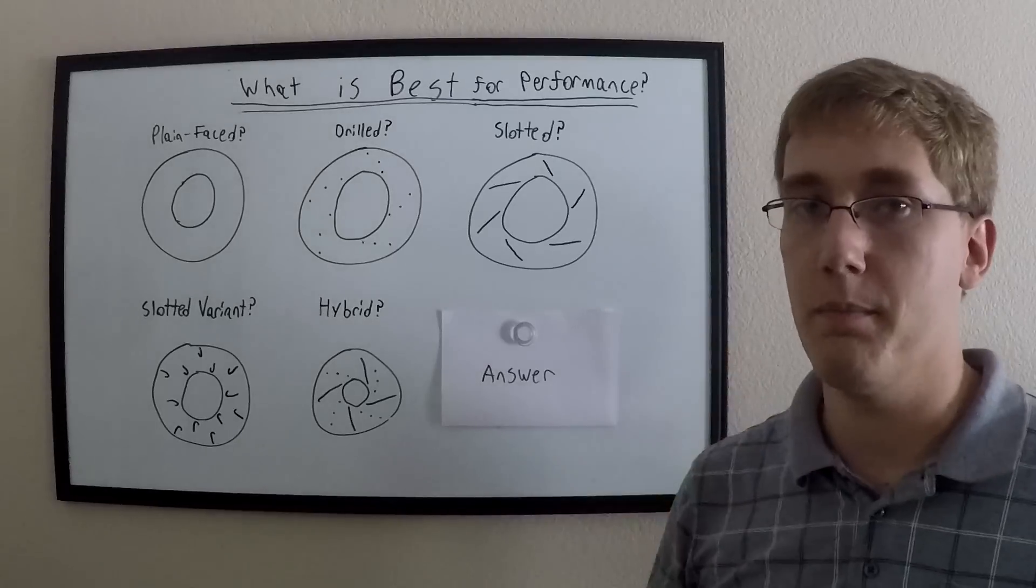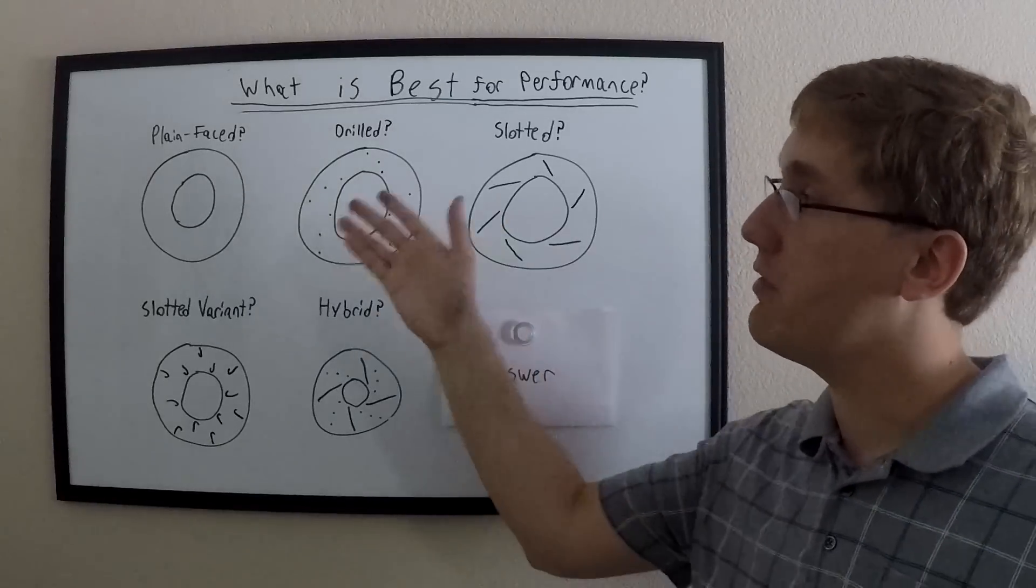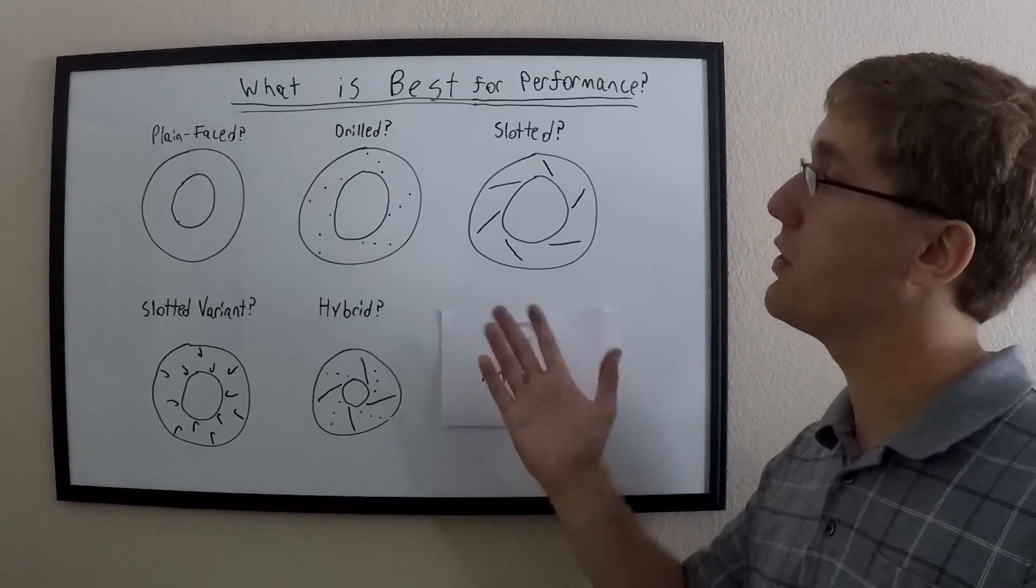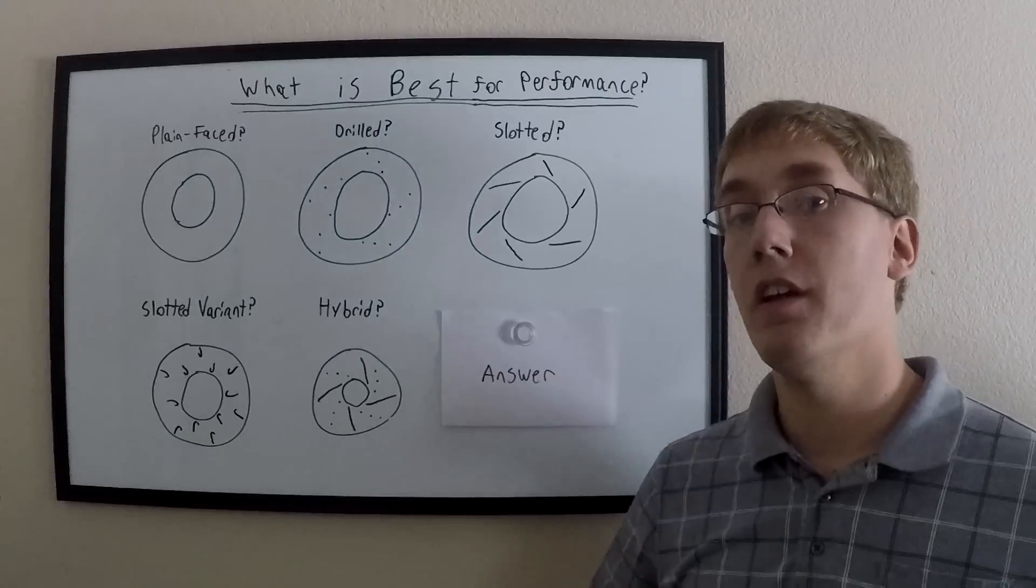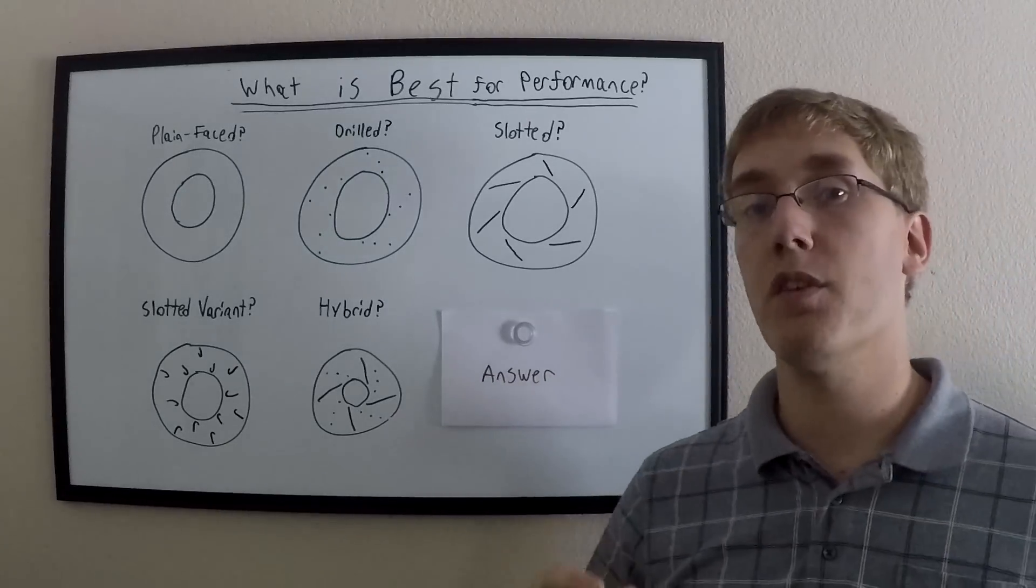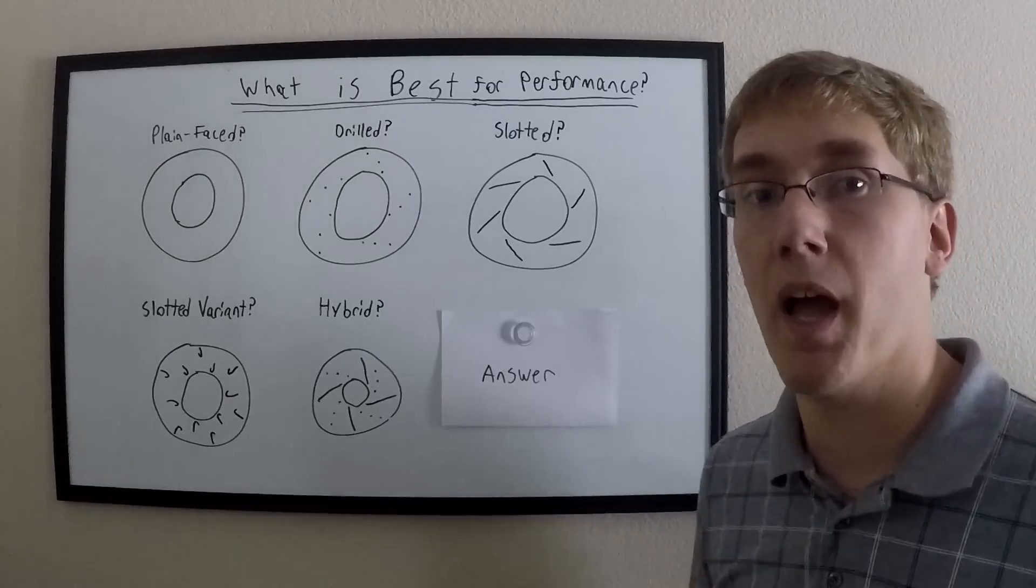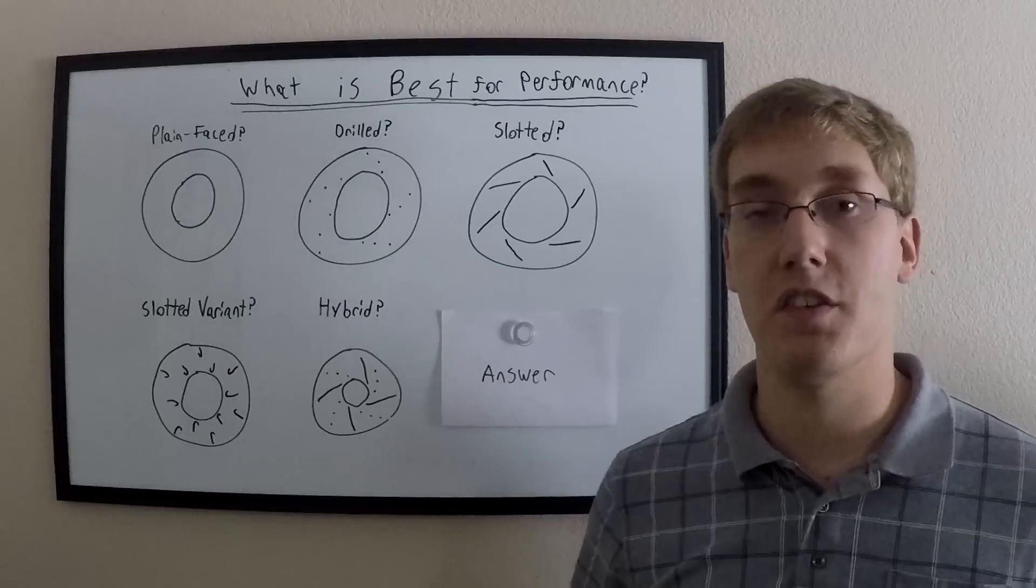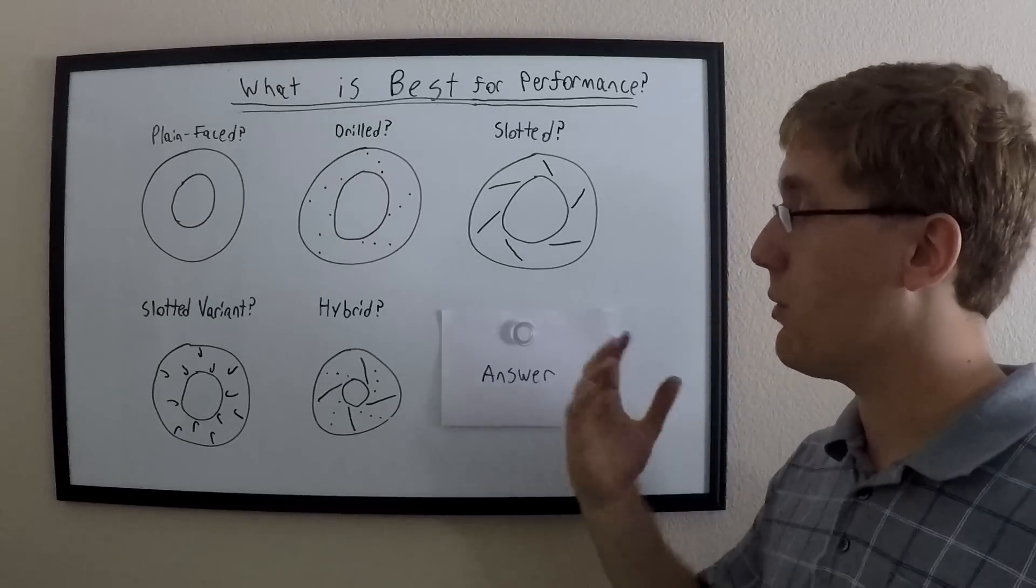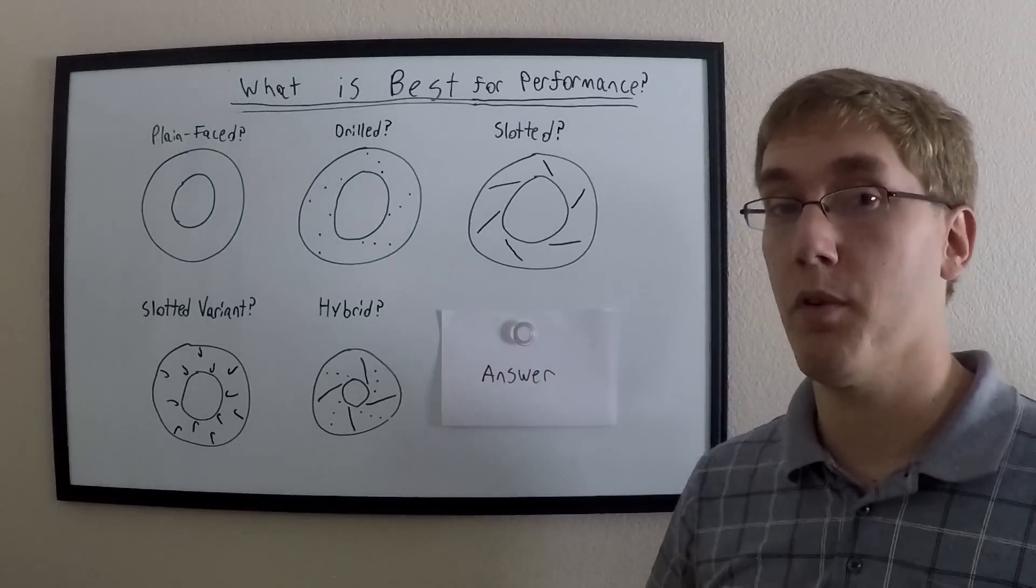Alright guys, so let's discuss the big question. What is the best for braking performance? Each of the different designs we've discussed today have their own distinct advantages. Plain-faced rotors are really good for endurance. They give you the longest pad life, they're the cheapest to make. Drilled rotors have the advantage of appearance, really. They used to be really beneficial back in the days of asbestos pads, but are really only for appearance nowadays. Slotted rotors give you the scraping capability of being able to keep the pads fresh and clean, while still being able to maintain even pad wear. But you can also go with a slotted variant, such as the J-hook, that gives you slightly less even pad wear, but gives you a more aggressive bite and slightly better pedal feel. And then, of course, there are hybrids out there. But the real answer to braking performance is none of these.